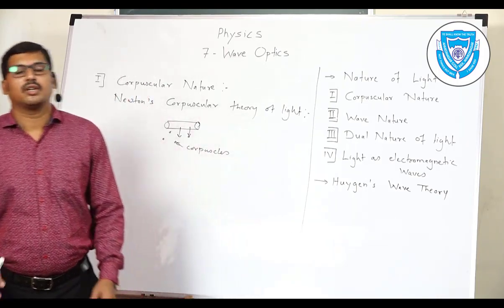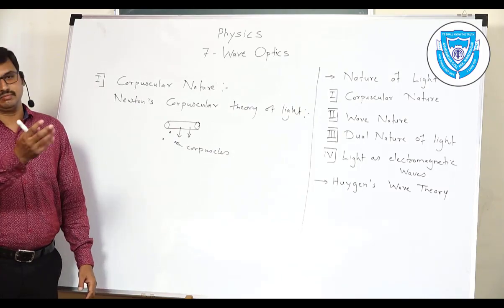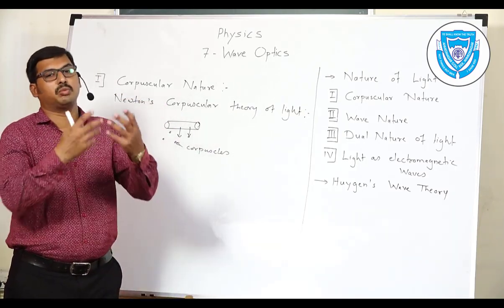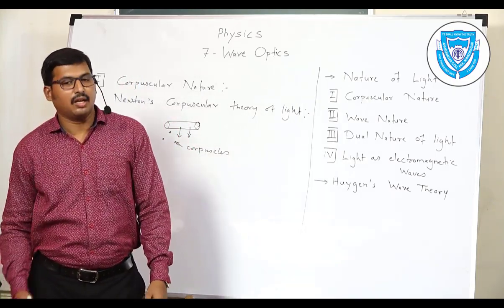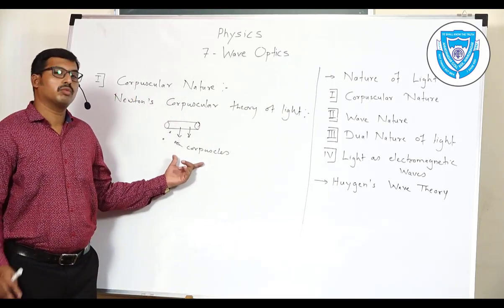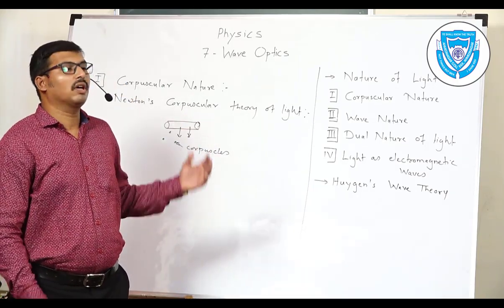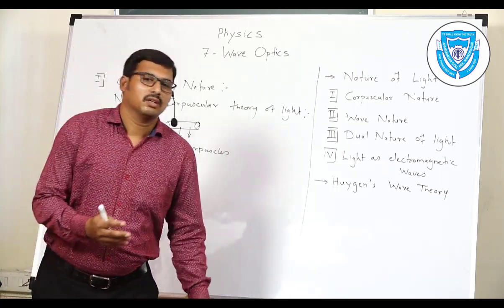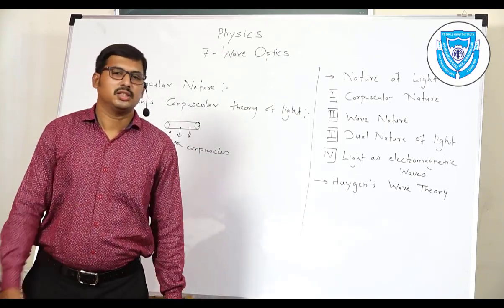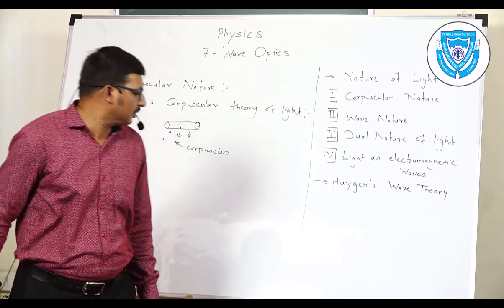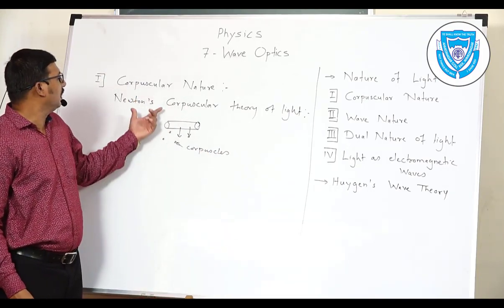The third point: corpuscles emitted by any light source have different speeds in different media. When corpuscles travel in air they have a certain speed, and when they enter water or any other transparent medium, the speed changes. Newton predicted that the speed of corpuscles is greater in a denser medium compared to a rarer medium — for example, greater in water than air. However, this is not correct; the actual experimental result shows this statement is wrong. In reality, speed is greater in a rarer medium compared to a denser one. These are the points of Newton's corpuscular theory.